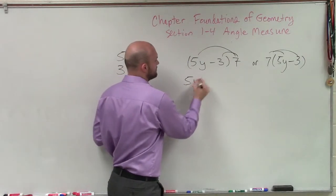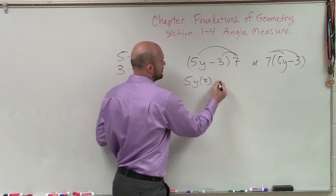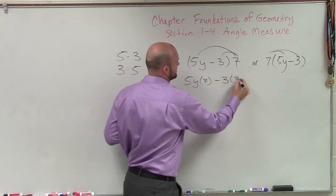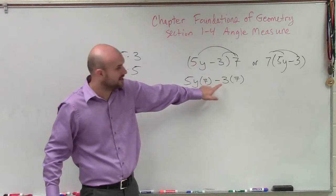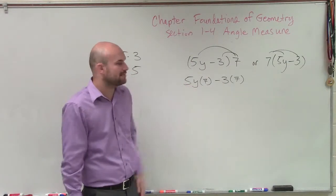It doesn't matter. So you do 5y times 7 minus 3 times 7. Notice that that 3 is negative, all right? And it doesn't matter which one I'm applying the distributive property to.